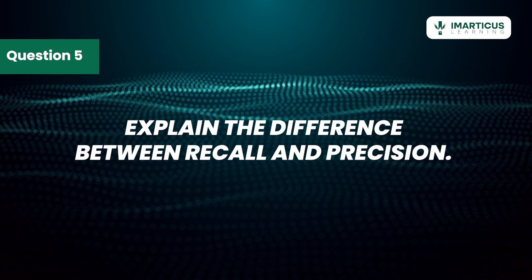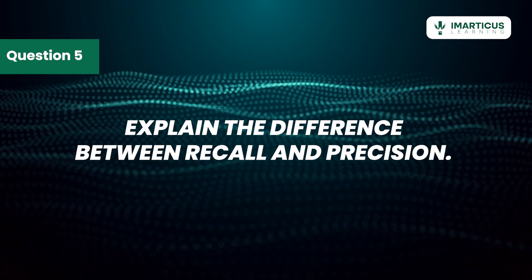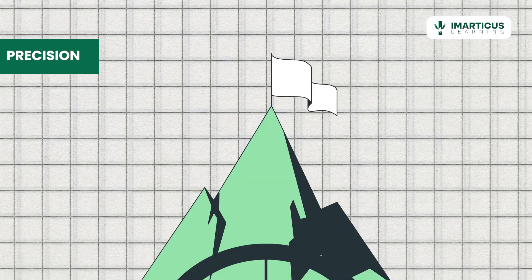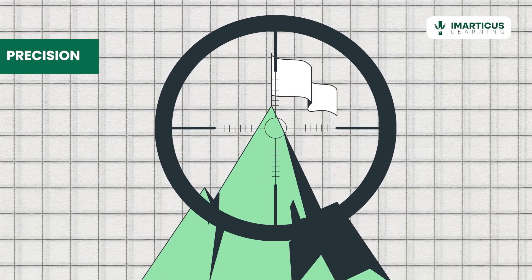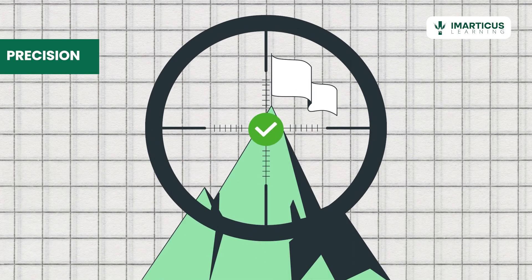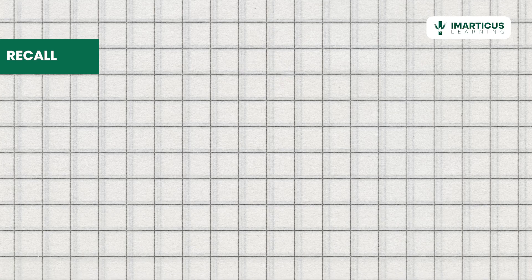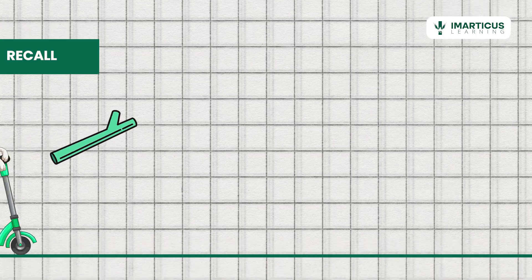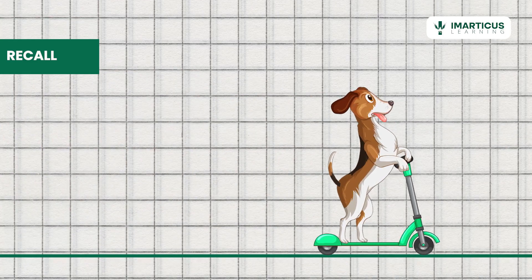Explain the difference between recall and precision. Recall and precision often get mixed up. Precision is like a sharpshooter who only wants to hit the target when they're sure, while recall is like a dog chasing after every thrown stick. Recall focuses on capturing as many true positives as possible, even if it means some mistakes.